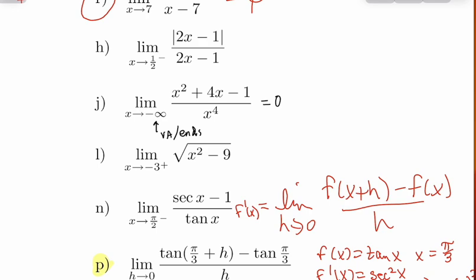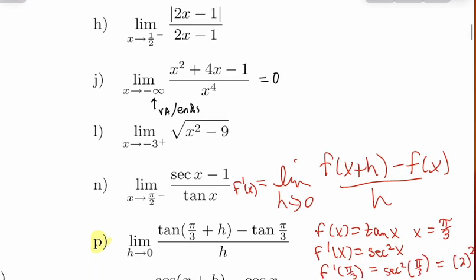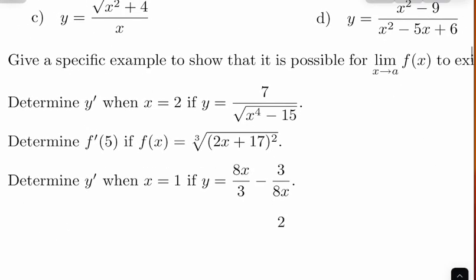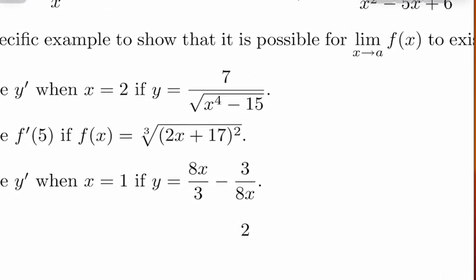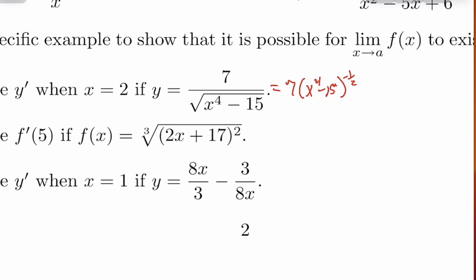Now let's practice some more derivatives before we do some integration practice. Let's go to number 12. It says find y prime when x is 2, if y equals 7 divided by the square root of x to the 4th minus 15. For derivatives and integrals, any rewrite that makes the process easier should happen first. I would rewrite this as 7 times x to the 4th minus 15 to the negative one-half power.